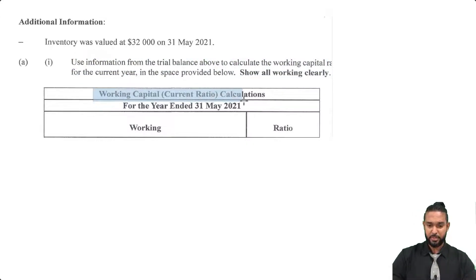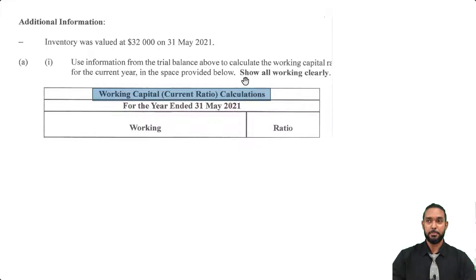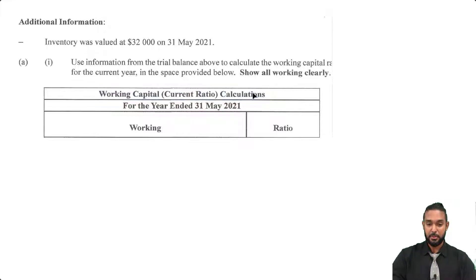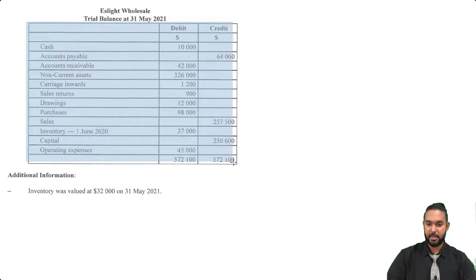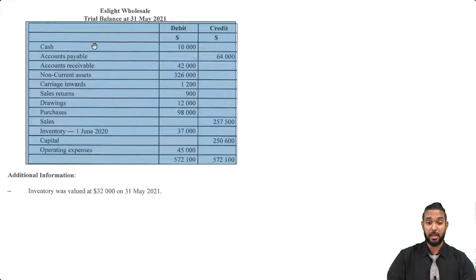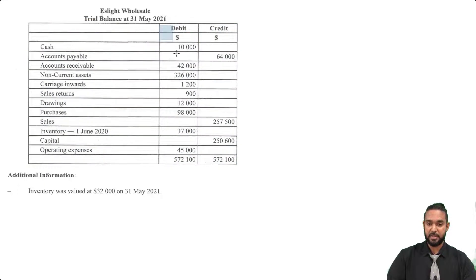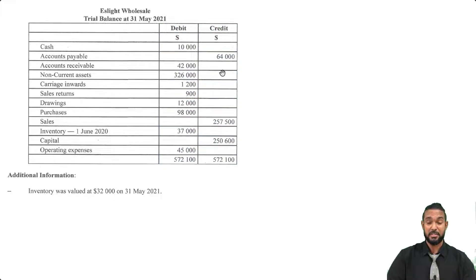When I first saw them ask for the working capital ratio, I was a bit confused because working capital is current assets minus current liabilities. But it kind of makes sense for it to be the current ratio, because that's current assets divided by current liabilities. So let's take a look at that calculation — let's pick up the current assets and current liabilities from the trial balance.